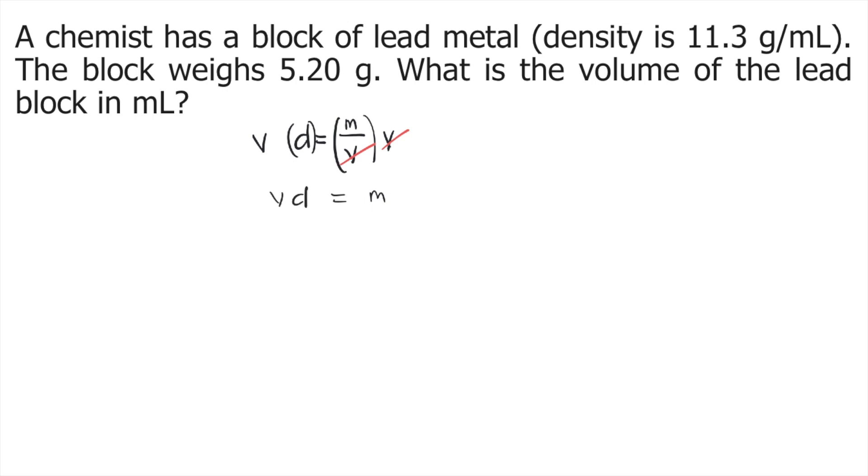To solve for v, you need to divide both sides of the equation by d. So d cancels on the right side, and v is equal to mass divided by density.